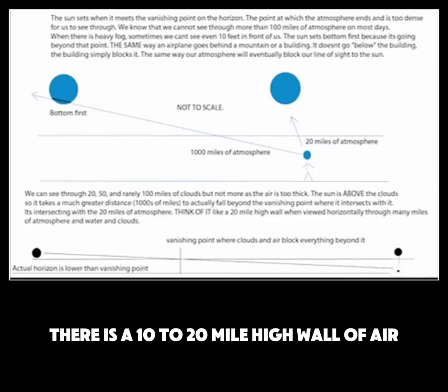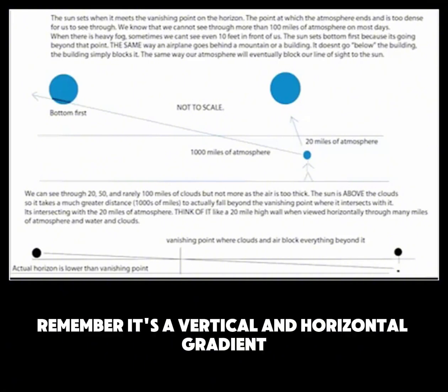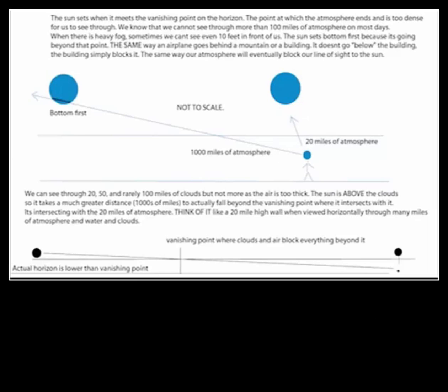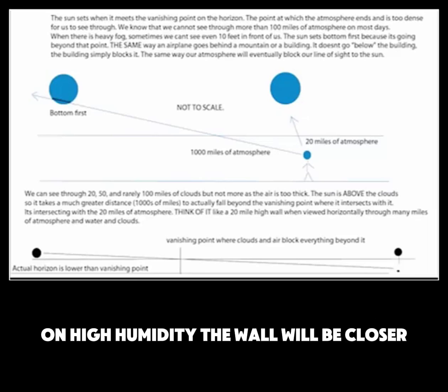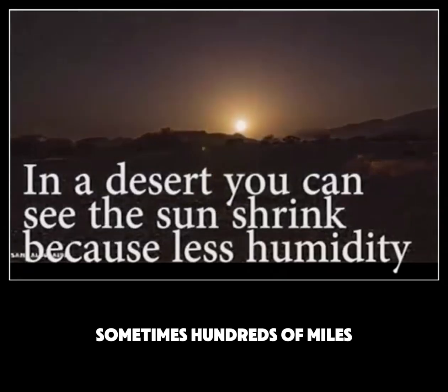Now combining all three ideas: right at the horizon there is a 10 to 20 mile high wall of air. The wall of air depends on weather — remember, it's a vertical and horizontal gradient. Think of it like a diagonal wall or a ramp to heaven. On high humidity the wall will be closer; on low humidity the wall will be further, sometimes hundreds of miles.